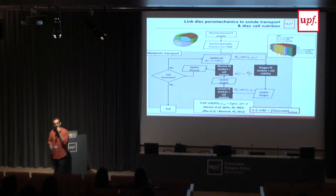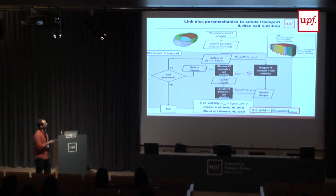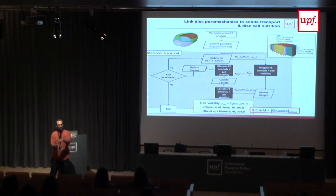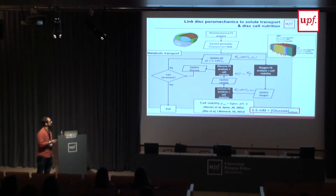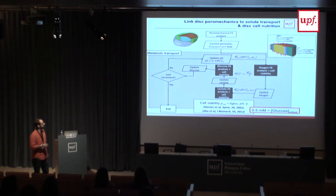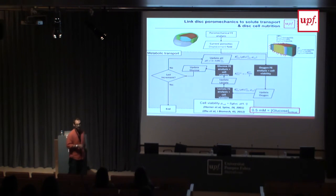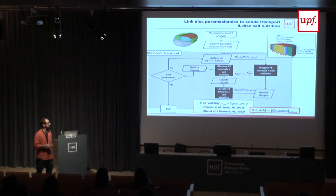The overall coupling scheme uses a weak coupling. We first solve the poromechanical analysis and extract current porosities and displacement fields to capture changes in diffusion distances. We then solve equations for oxygen, lactate, and glucose sequentially, also updating pH. Based on experimental evidences, we infer probabilities of cell death as a function of current glucose level, pH level, and time.